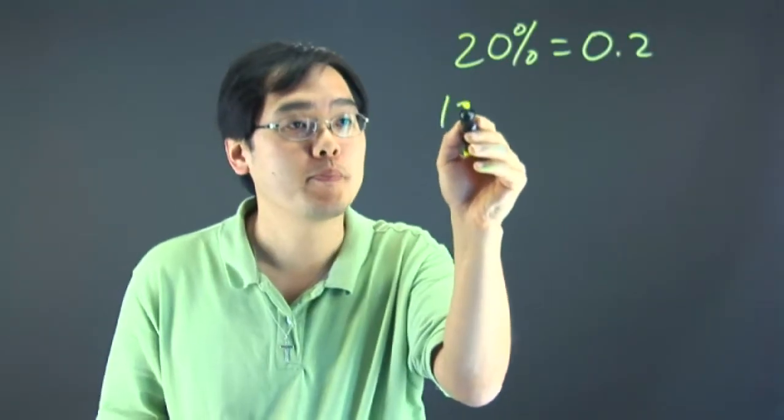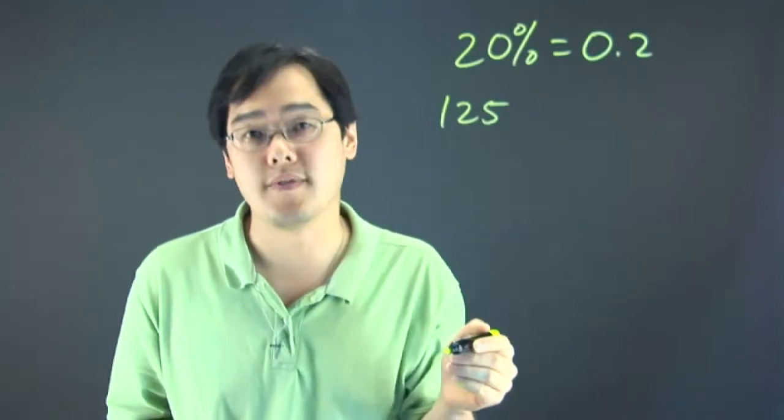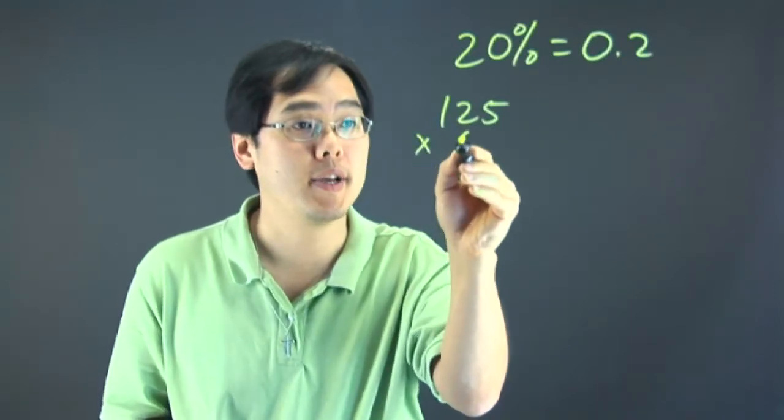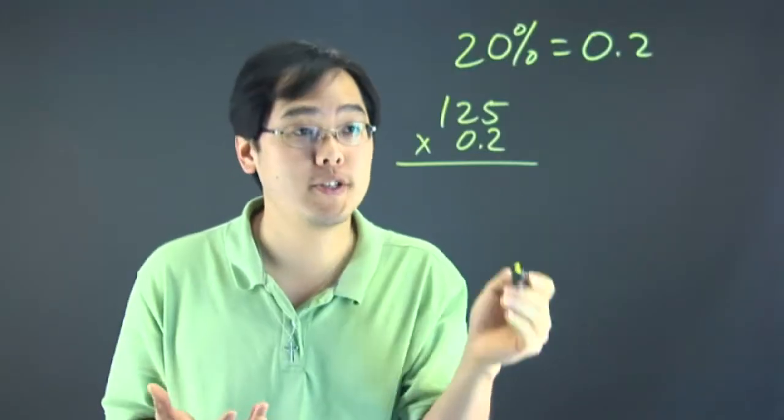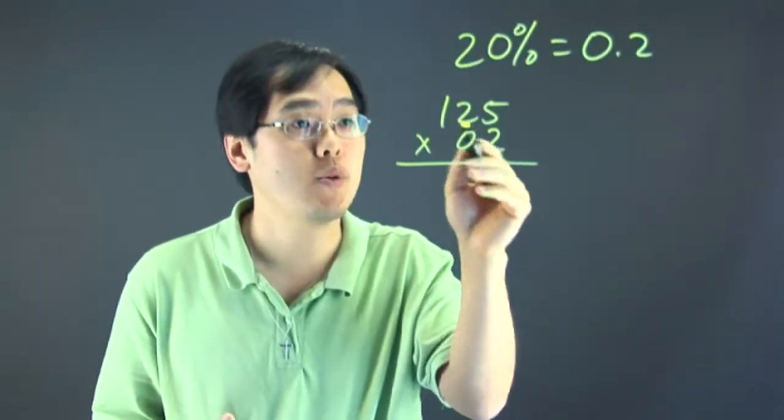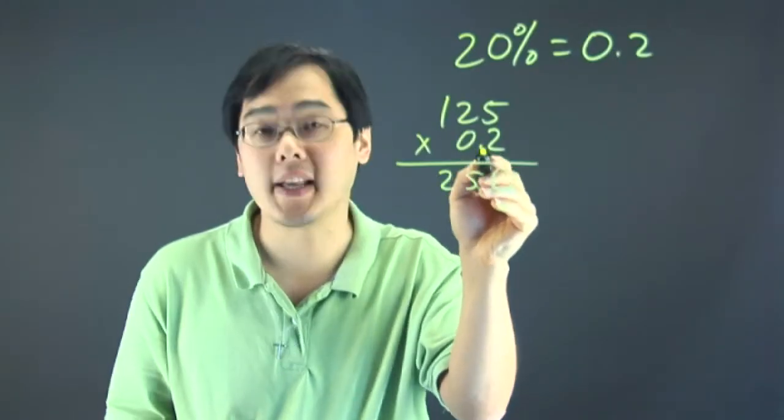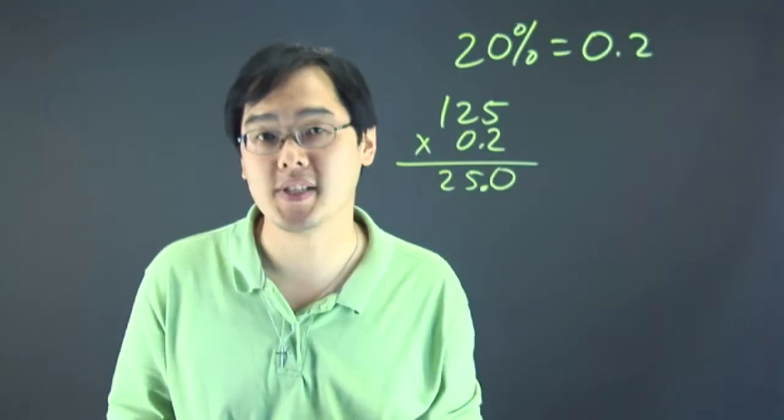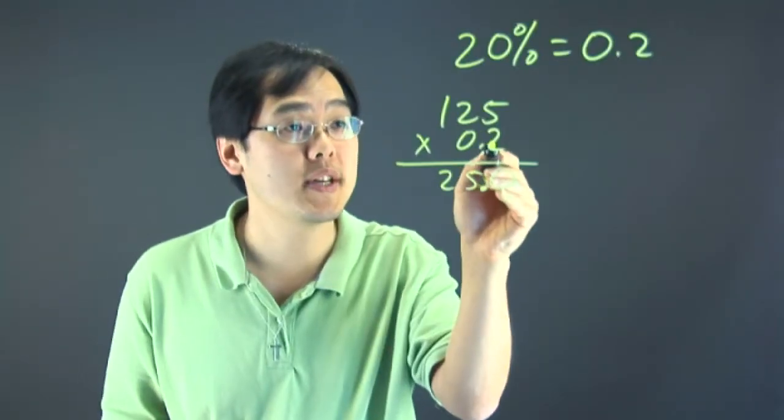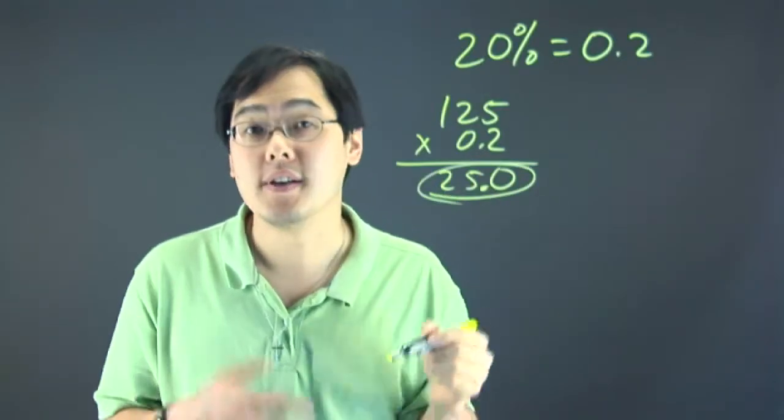For example, if you have 125 and you want to figure out 20% of 125, you can just multiply by 0.2. Like I said, it's just like multiplying by 2 except with a decimal point. So 125 times 2 is 250. The only thing you've got to keep in mind is make the adjustment for the one decimal place. So just put the decimal place here. So what that means here is 20% of 125 is simply 25.